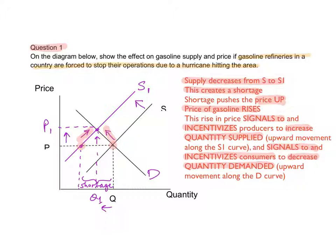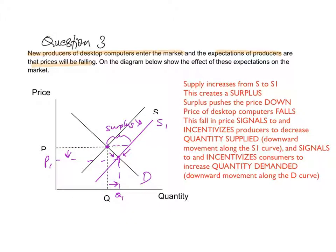I just want to talk you through the terminology and how to describe this accurately. This brings us to question 3. If you read question 3, it says new producers of desktop computers enter the market and the expectations of producers are that prices will be falling. These changes in the non-price determinants of supply will cause supply to increase — supply increases from S to S1, shifting to the right. This shift of supply will create a surplus.